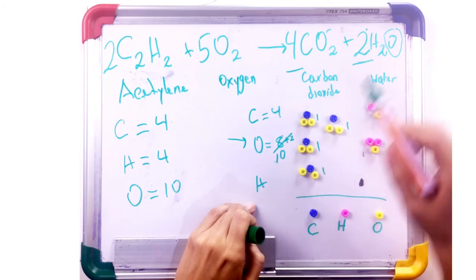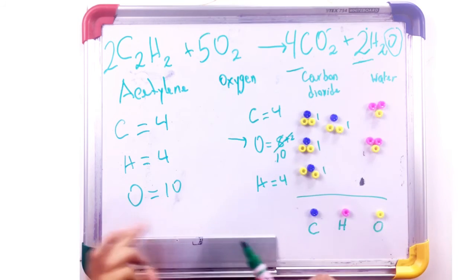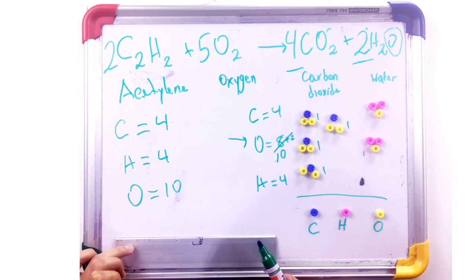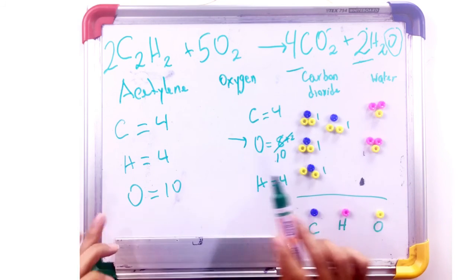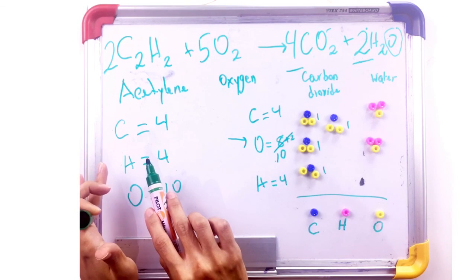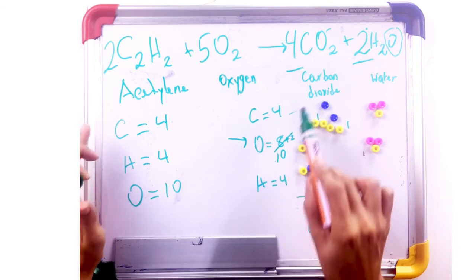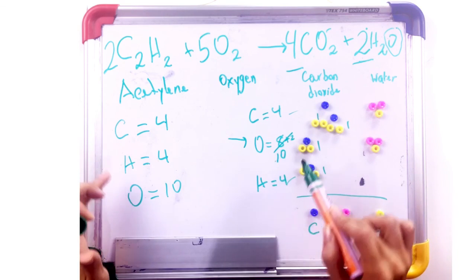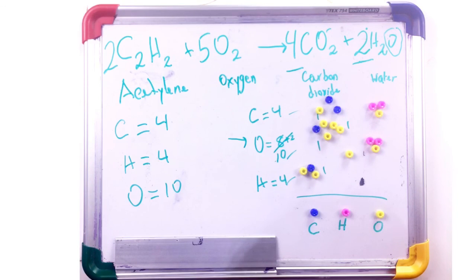And hydrogen is going to be two times two, four. Our equation has been proven to be balanced because it contains the same number of atoms from both sides on the reactants as well as on the product side to be the same. Carbon is four, hydrogen is four, and oxygen are now 10. Thanks for watching. See you in the next video.